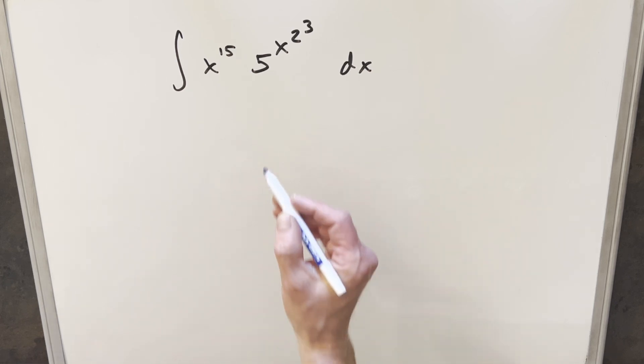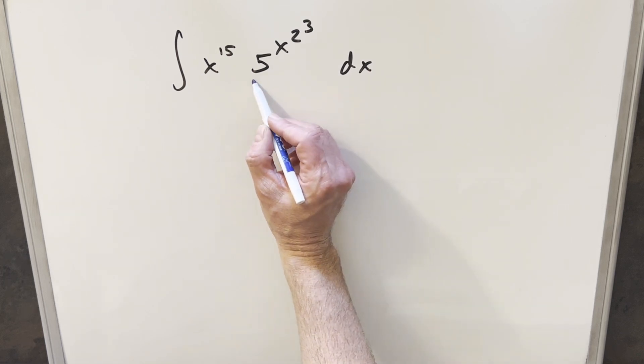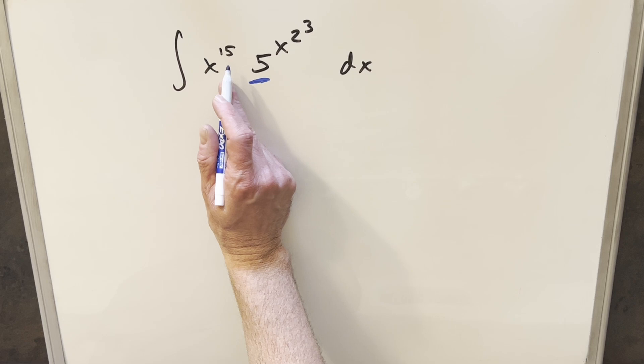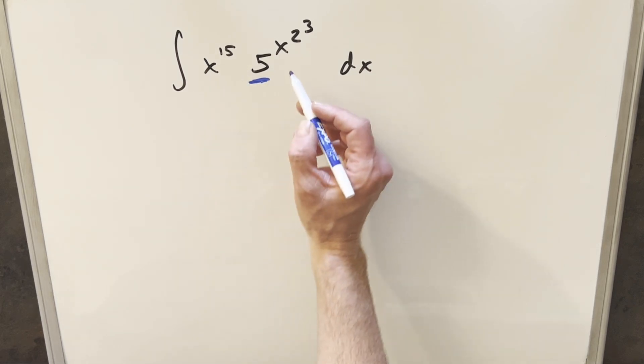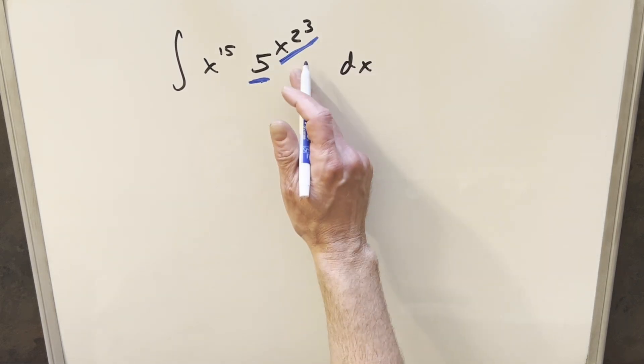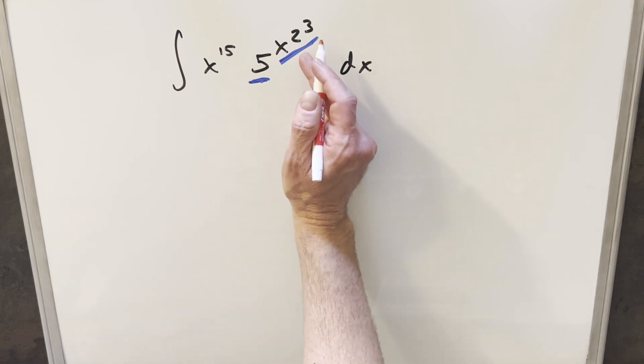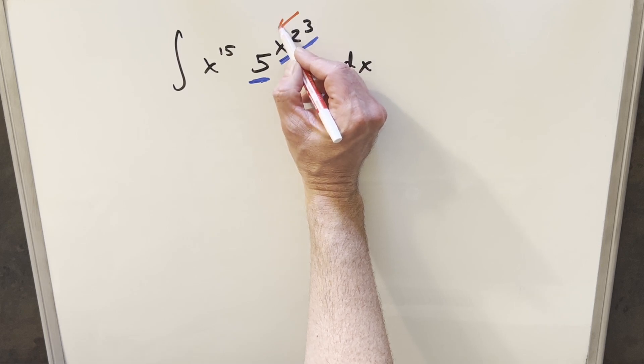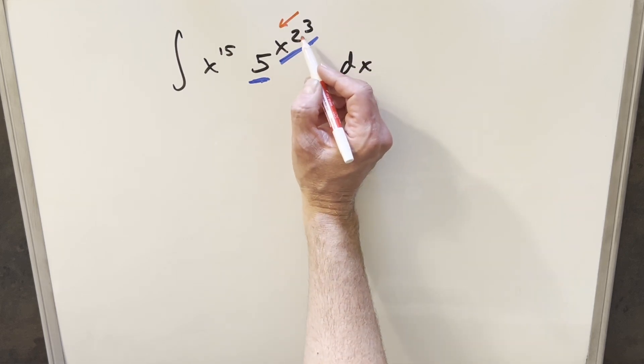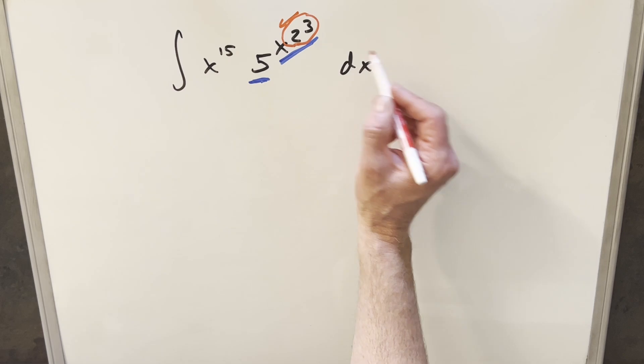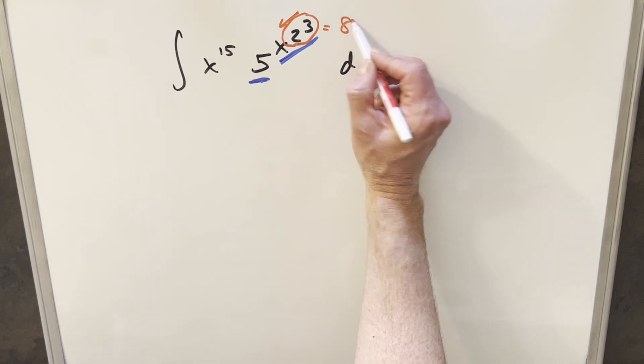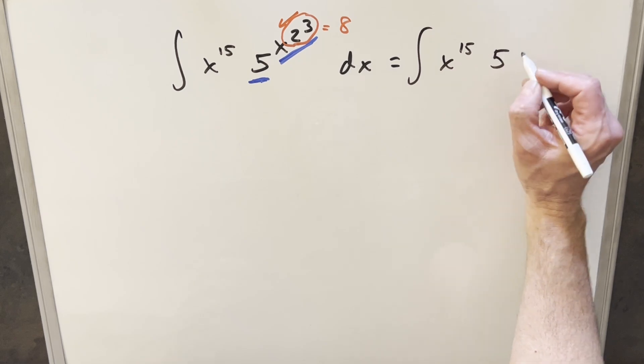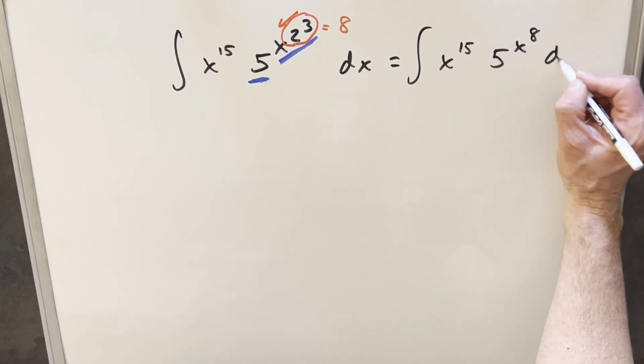Okay, we have here quite a few things to think about. First of all, we like the base to be e in an exponential, so that's one concern. And then kind of a large power on here, and it's kind of weird to have this exponent tower. Well, one easy thing I can do to start is we can just work on this exponent tower. Exponent towers are evaluated from top to bottom, so we really don't need 2 to the 3 here. We can just multiply that out. 2 cubed is the same thing as 8. So I'll just do a quick rewrite, and we'll have x to the 15th, and this becomes 5 to the x to the 8 dx.